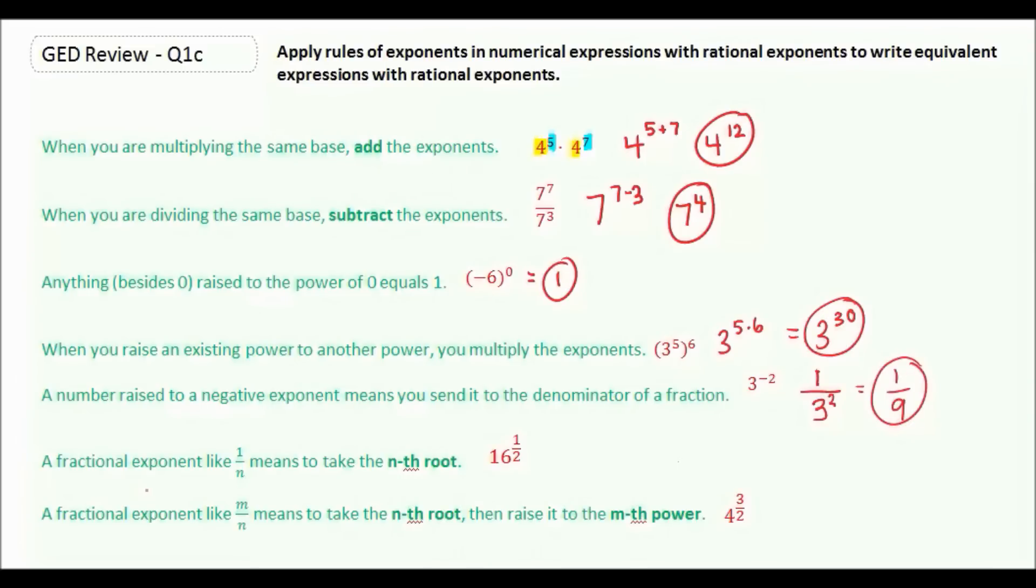A fractional exponent like 1 over n means to take the nth root. So for 16 to the 1 half power, it would be the square root of 16, which equals 4.